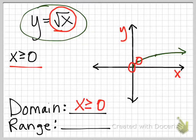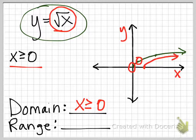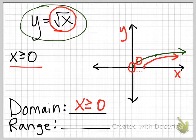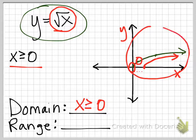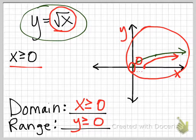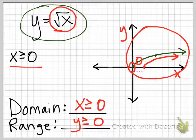Now if this graph shifted and started over here, then my domain would shift also. But for the parent function, it's just 0. Notice also this is only in the first quadrant, where all the y values are also positive. So y is also greater than or equal to 0. These are the most important points of the parent function.